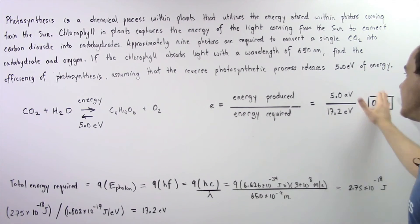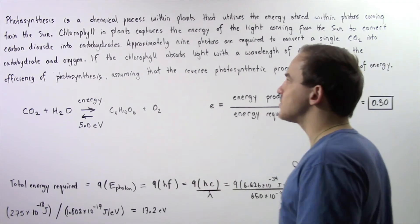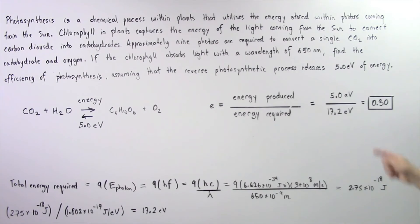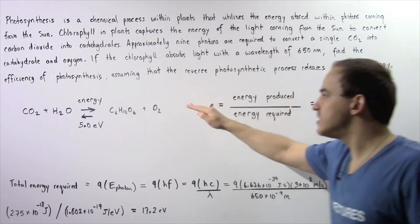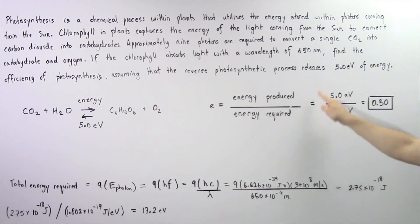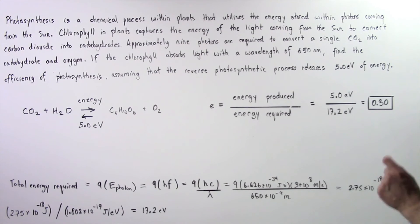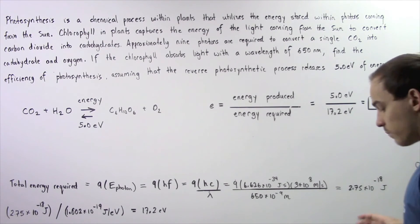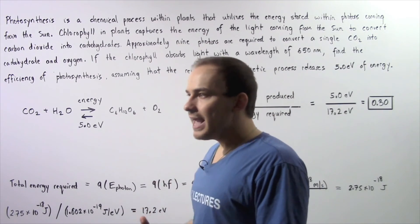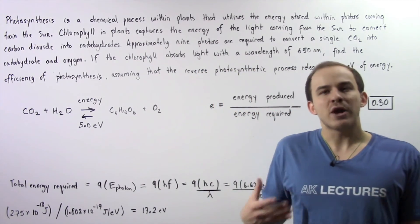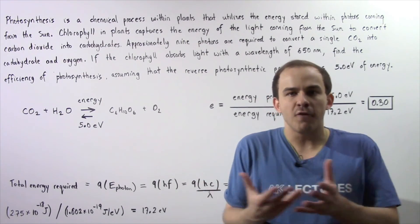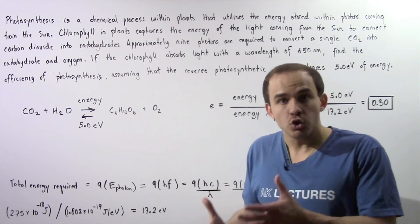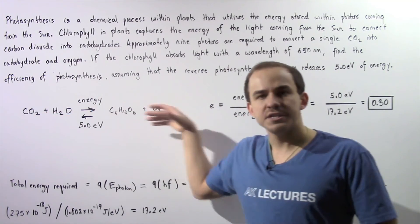To calculate the efficiency of photosynthesis, we take the energy produced in the reverse process — 5 electron volts — and divide by the energy required by the chlorophyll, 17.2 electron volts. We obtain approximately 0.30, meaning the plant is about 30% efficient in transforming the energy stored in the photons and using that energy to power the photosynthetic process.